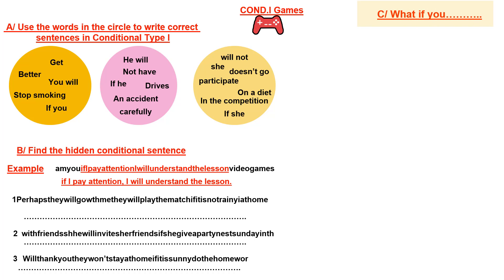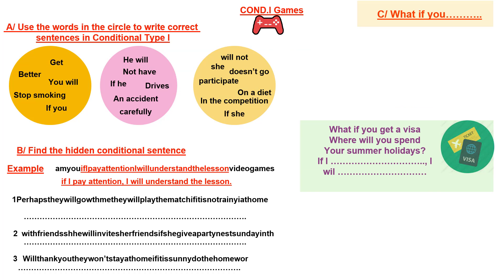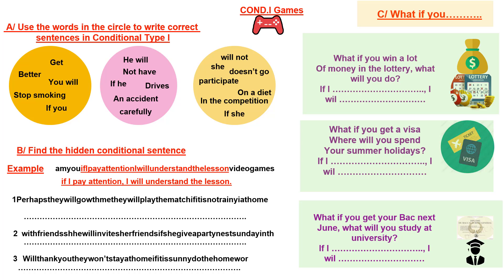The last game is about possible actions — 'What if you...?' You have three situations. Number one: what if you win a lot of money in the lottery? What will you do? Complete the sentence by writing a correct conditional type 1 sentence. Number two: if you get a visa. Number three: if you get your back. For the three situations, no more than three minutes total. For all three games combined, it's roughly eight minutes — that should be enough.